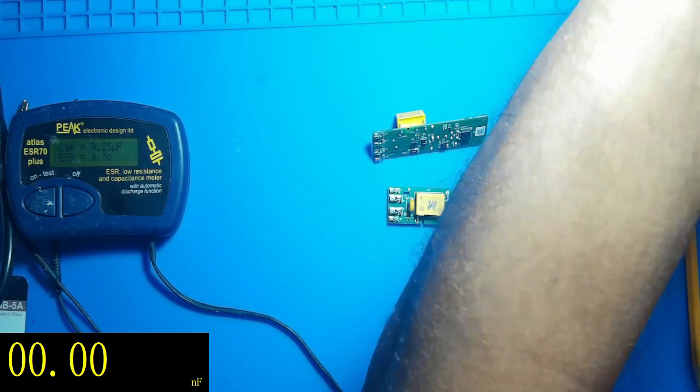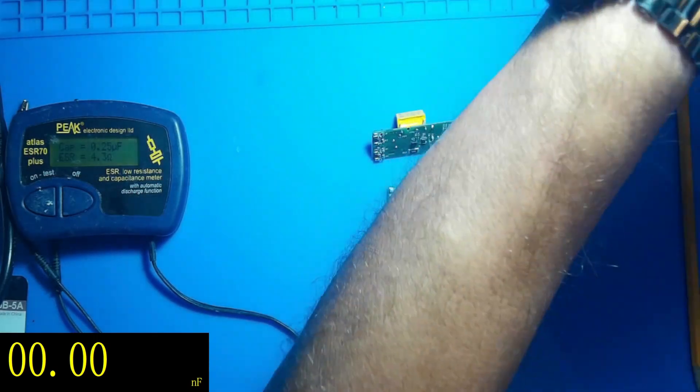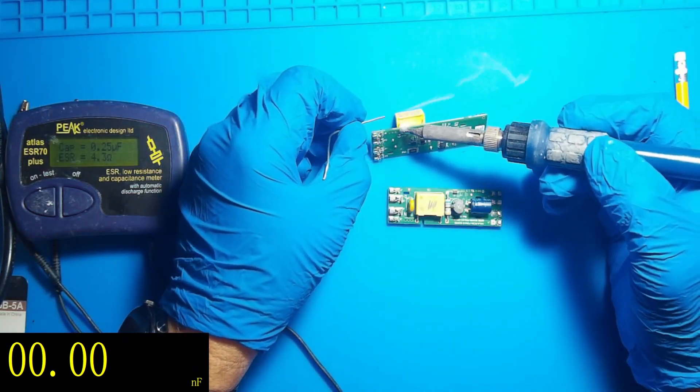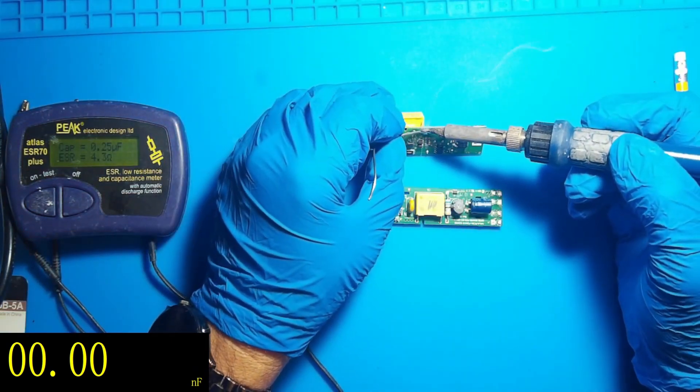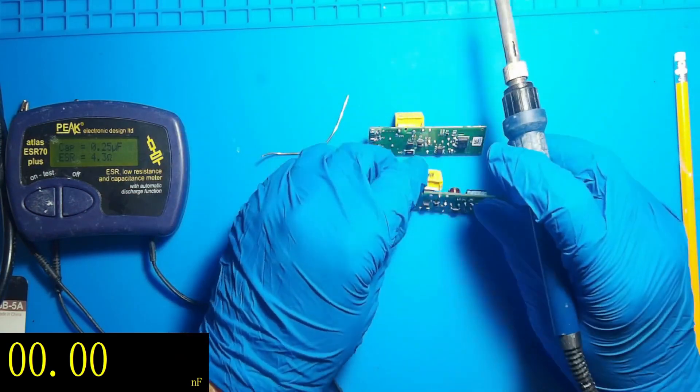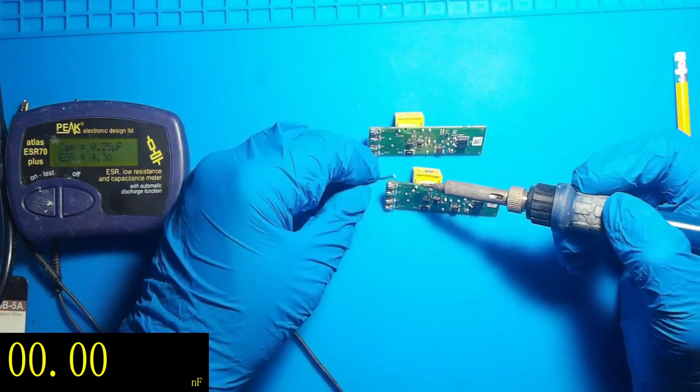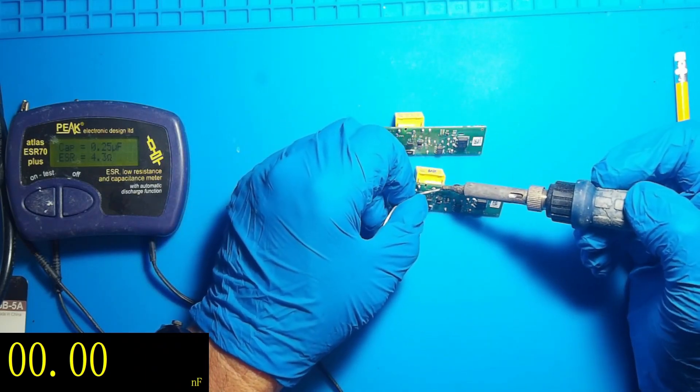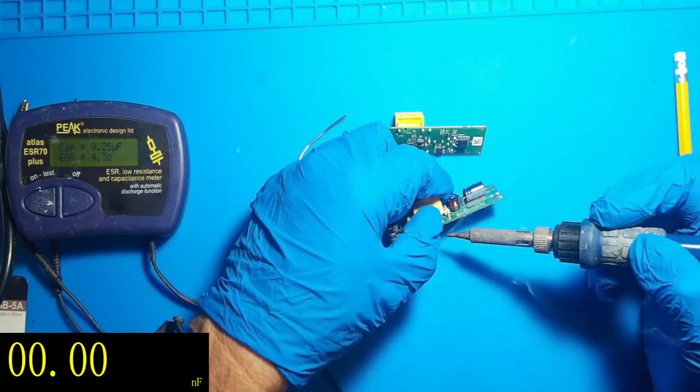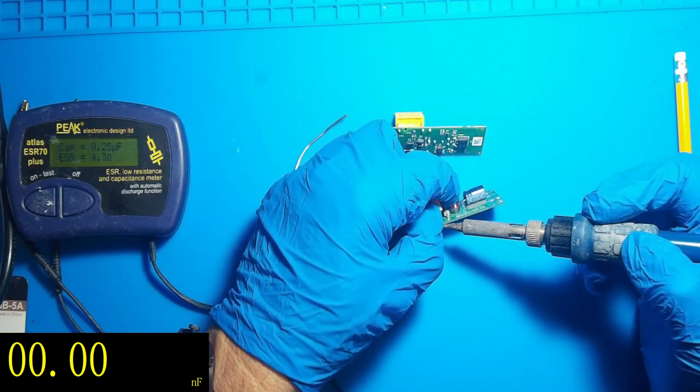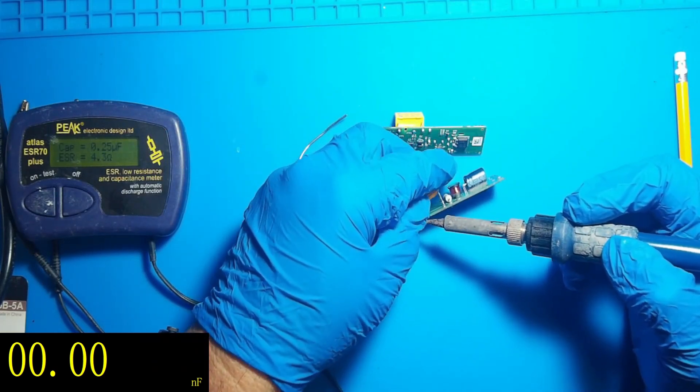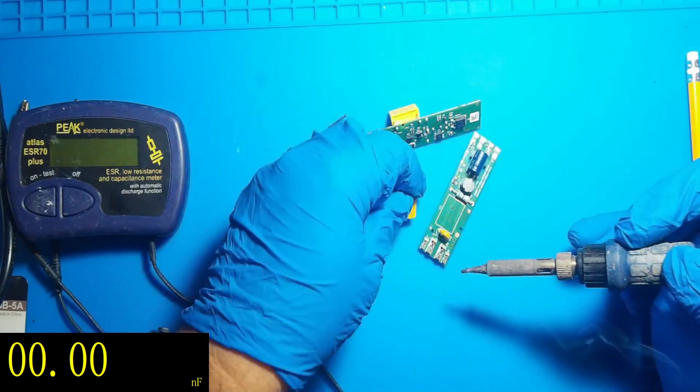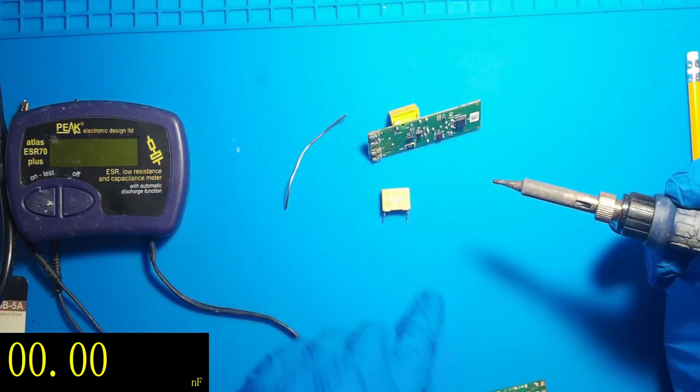So trusty solder and iron. Bit of solder which don't want to come off. Right, let's just get a bit of leaded on there. I would do the same here. That's that one, that's the bad one.